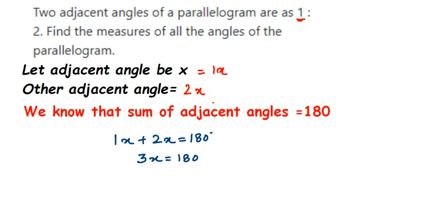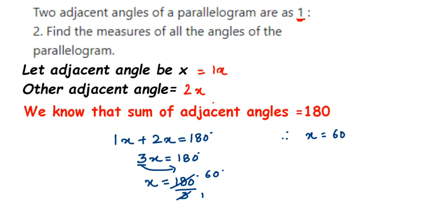So I have the equation: X + 2X = 3X = 180 degrees. I want only the value of X, so I transpose 3 to the other side — 3 was in multiplication, so it comes to the other side as division. 180 divided by 3 equals 60. Therefore X = 60 degrees. The adjacent angle is 2X, so 2 × 60 = 120 degrees.